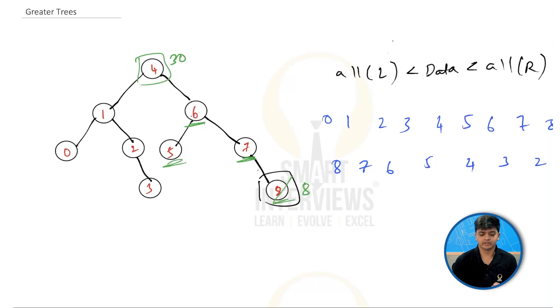For in-order, you will first do left, then you'll print the data, and then you'll do right. For reverse in-order, you simply have to first go to right side, then print data, and then go to left side. That is the only difference between in-order and reverse in-order.